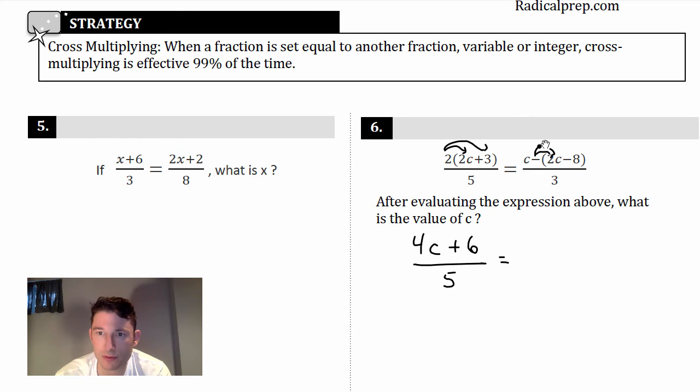All right, so in number 6, we've got two fractions set equal to each other, and it looks a little more complicated, so let's try and clean this up a little bit. It says after evaluating the expression above, what is the value of c? Well, this top one here, let's clean it up. We've got 4c + 6 all over 5 = I'm going to distribute that negative.